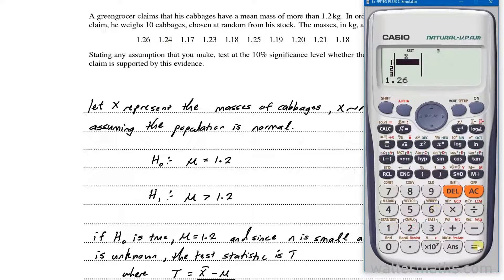We have 1.26, 1.24, 1.17, 1.23, 1.18, 1.25, 1.19, 1.20, 1.21, and 1.18. This is what we have right here. We actually have 10 entries in total.